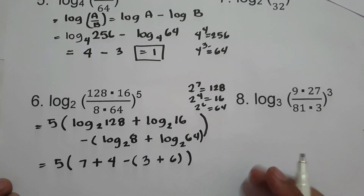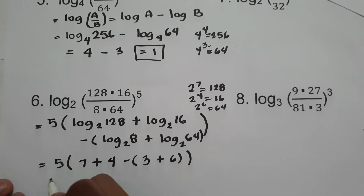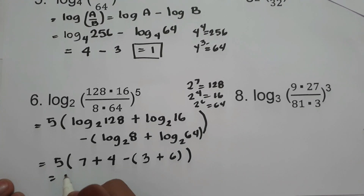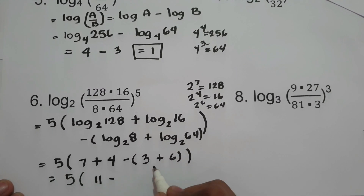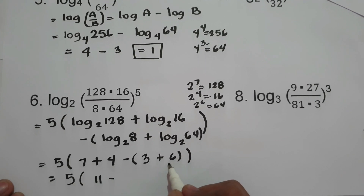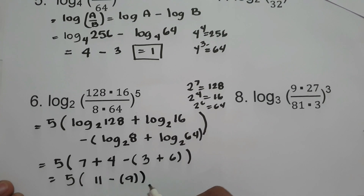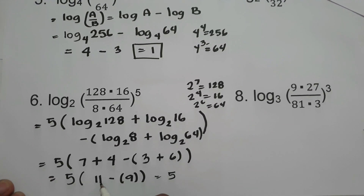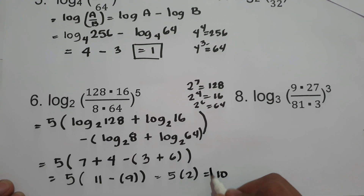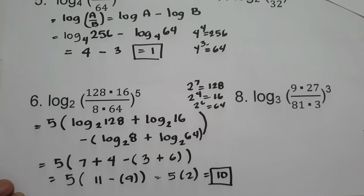Now let us simplify. We have 5 times the quantity (7 plus 4) minus (3 plus 6). That is 5 times 11 minus 9, which is 5 times 2, giving a final answer of 10.